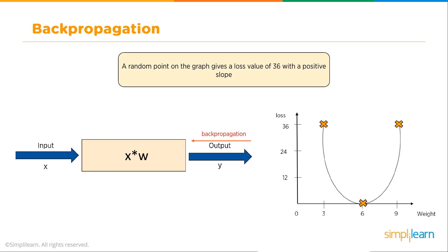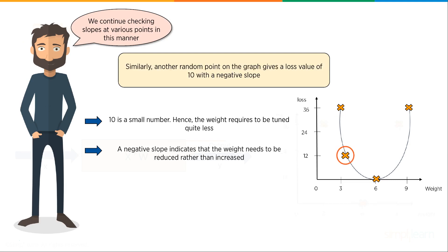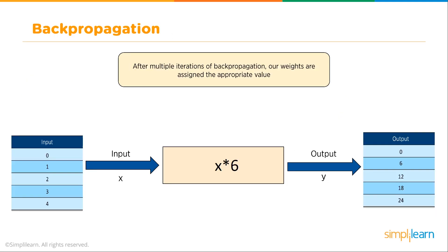Here's our simple model with just one node of X times W. The input comes in, X times W, the output. Then we're going to propagate that loss going the other way. A random point on the graph gives a loss value of 36 with a positive slope. 36 is quite a large number. This means our current weight needs to change by a large number. A positive slope indicates that the change of the weight must be positive. Similarly, another random point on the graph gives a loss value of 10 with a negative slope.